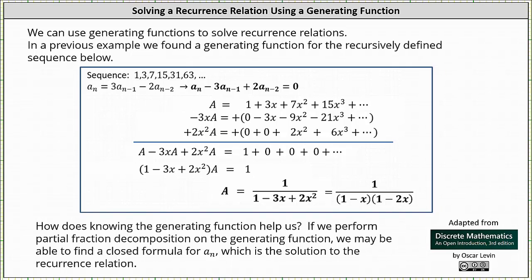In a previous example, we found a generating function for the recursively defined sequence 1, 3, 7, 15, 31, 63, and so on, which had the recurrence relation a_n = 3·a_(n-1) - 2·a_(n-2), where a_0 = 1 and a_1 = 3. We found the generating function to be A = 1 / (1 - 3x + 2x²). Notice how the denominator factors: 1 - 3x + 2x² = (1 - x)(1 - 2x).